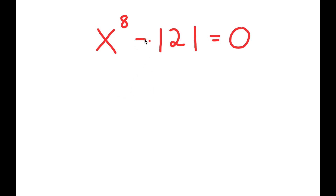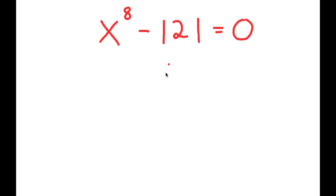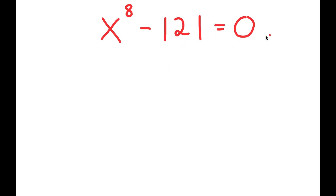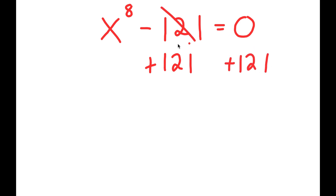In this video, I'm going to be teaching you how to solve this exponential equation. We have x to the power of 8 minus 121 is equal to 0. Now what most people would think to do to solve this equation is add 121 on both sides, so then you get x to the power of 8 equals 121.